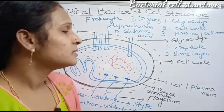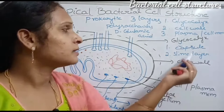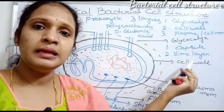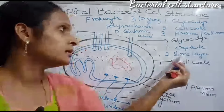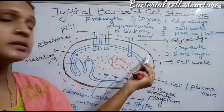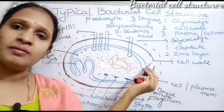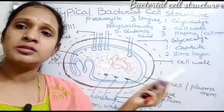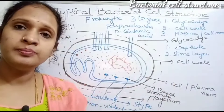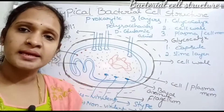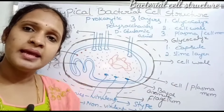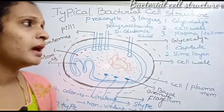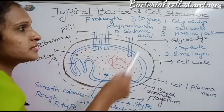The next part is the slime layer. The slime layer is a thin layer that also protects the cell wall. The slime layer is also made up of polysaccharides such as dextran.